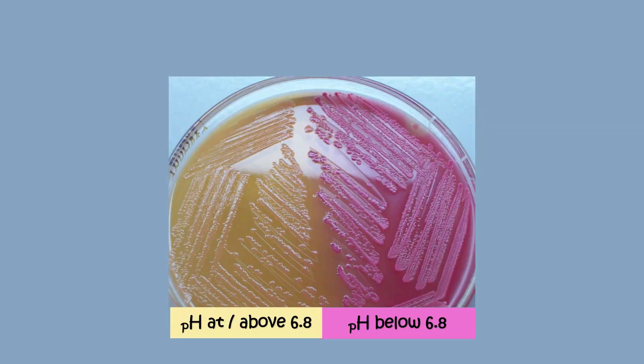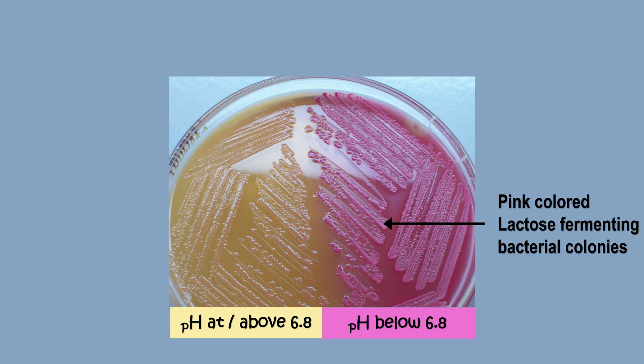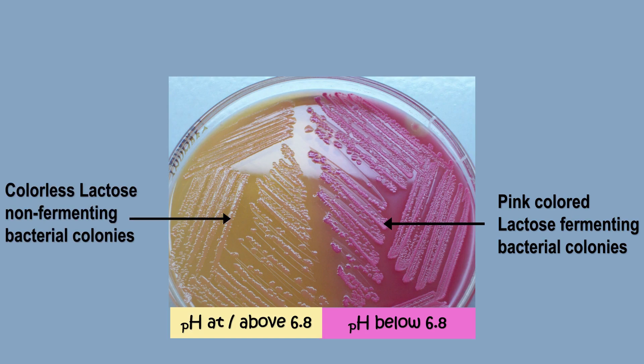Here on this McConkie's Agar plate, two types of bacteria are present. The bacteria on the right side utilize lactose, resulting in an acidic pH below 6.8, so these bacteria and the surrounding medium appear pink. The bacteria on the left side do not utilize lactose, so there is no change in pH and the bacterial colony appears colorless. In this way, McConkie's Agar differentiates lactose fermenter and lactose non-fermenter bacterial colonies.